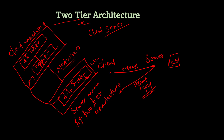The client machine has a direct connection to the server machine through an API — Application Programming Interface. Different examples of APIs include ODBC (Open Database Connectivity) and JDBC (Java Database Connectivity). The application on the client end can directly communicate with the database at the server side, so applications and database systems are directly connected.